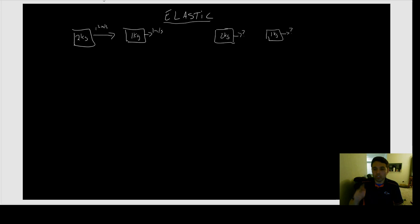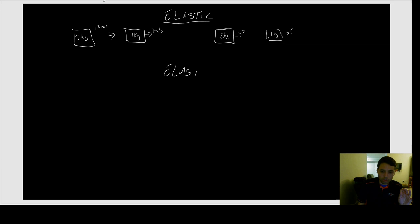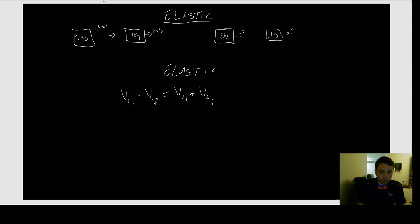What if we have a collision with two unknowns — we don't know either object's final velocity? You can only solve this if the collision is elastic. For an elastic collision, there's a special equation: the sum of object one's velocities before and after equals the sum of object two's velocities. V1i plus V1f equals V2i plus V2f. This only works for elastic collisions.